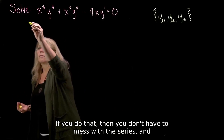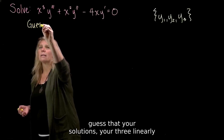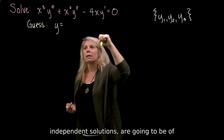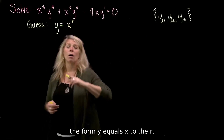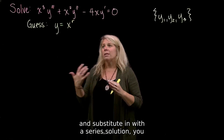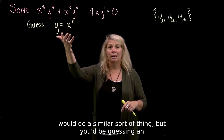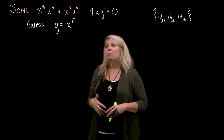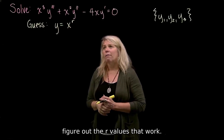If you recognize it as a Cauchy-Euler equation, you don't have to work with series. You start with the guess that your three linearly independent solutions are going to be of the form y equals x to the r. Then you take the appropriate derivatives and substitute in. With a series solution you'd do something similar, but guessing an infinite series of powers — here you just take derivatives, substitute in, and figure out which r values work.